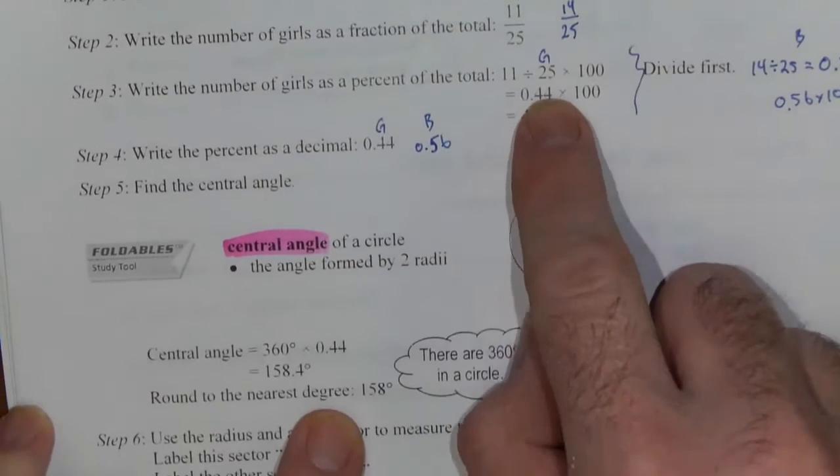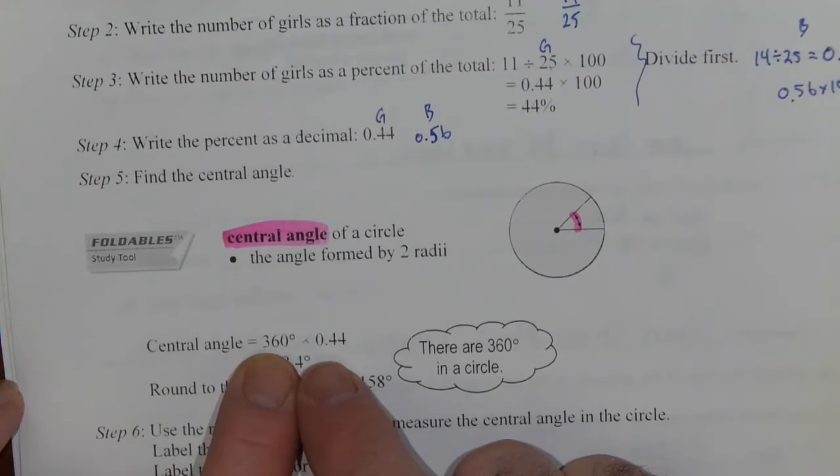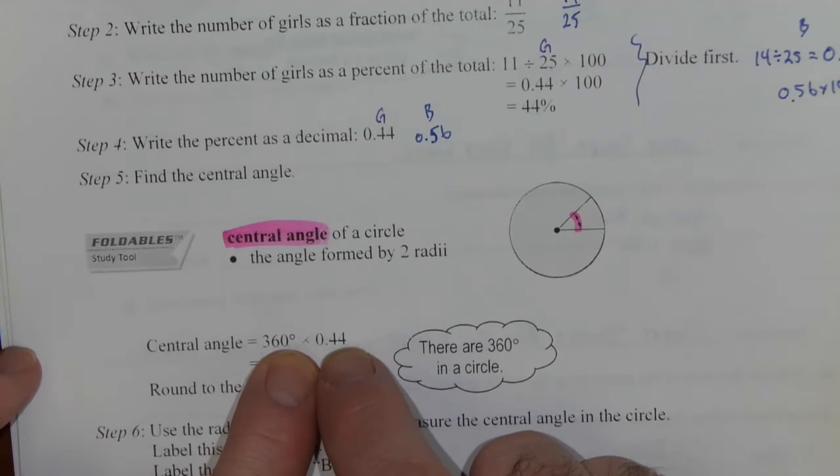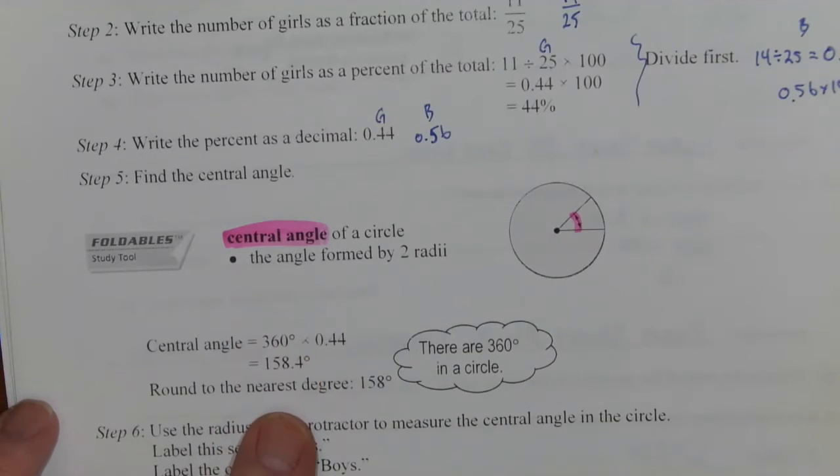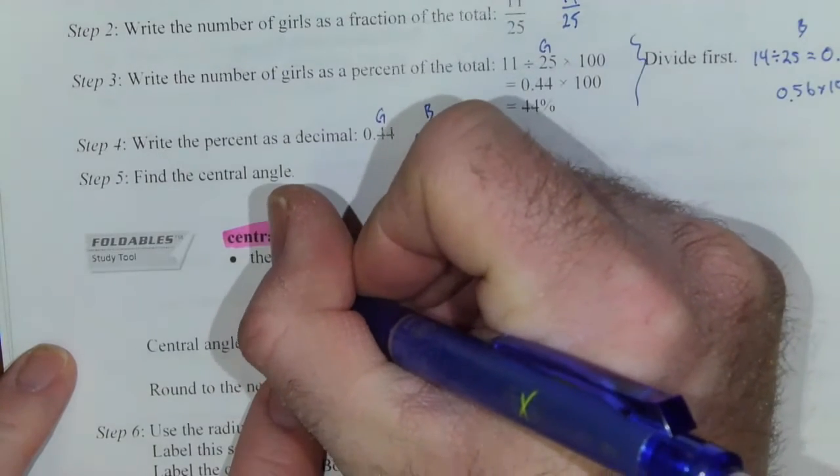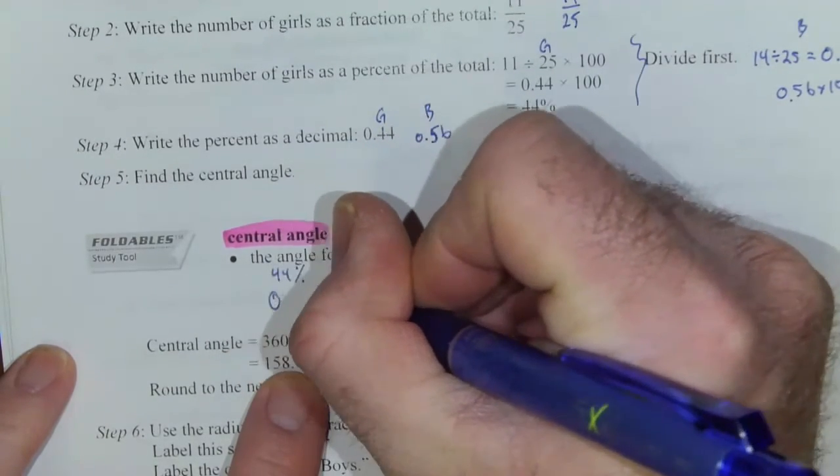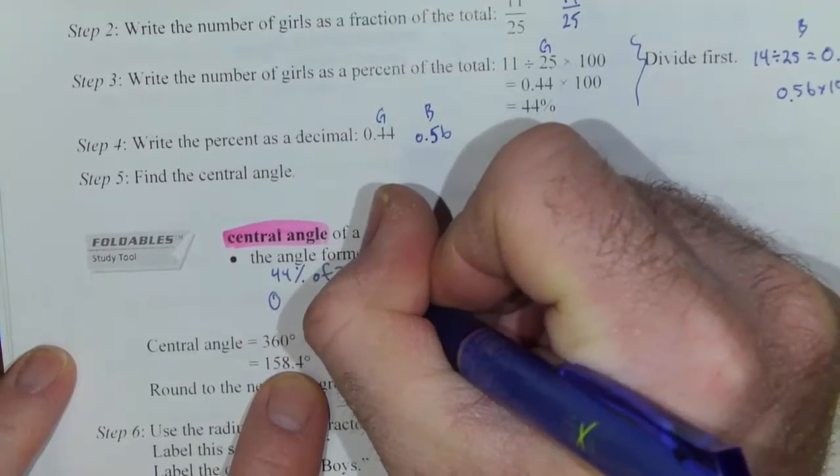We're wanting to know 44 percent of 360 degrees. So 360 degrees times 0.44. Now the way this is written, I'm not real excited about because I want to know, well really what I want to know is 44 percent of 360.